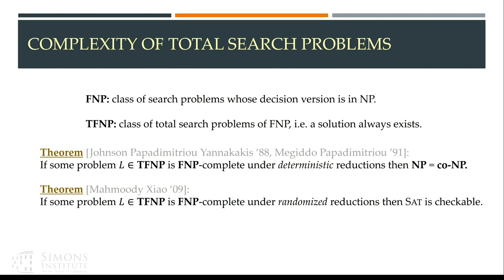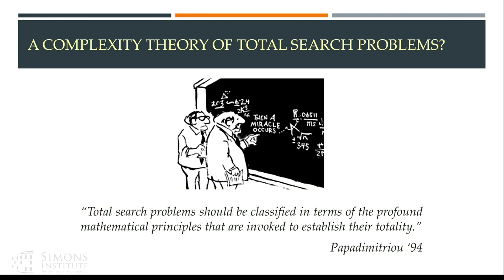What was the idea behind totality? When Papadimitriou defined TFNP problems, he tried to classify these problems based on the mathematical principle used to show their totality. Total problems are ones where a solution exists, and to show that a solution exists, we use a mathematical principle — for example, the pigeonhole principle or parity. Problems are classified according to which principle is used.